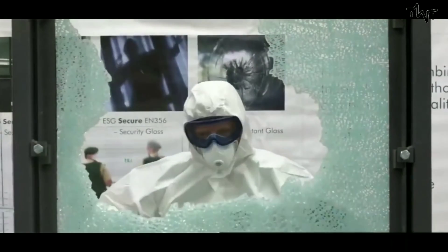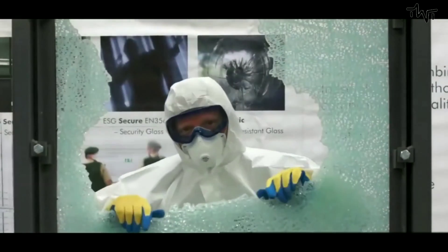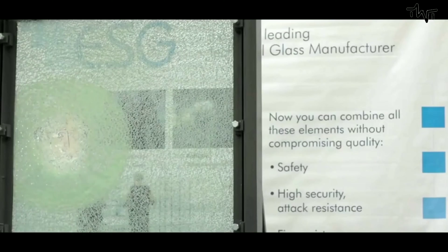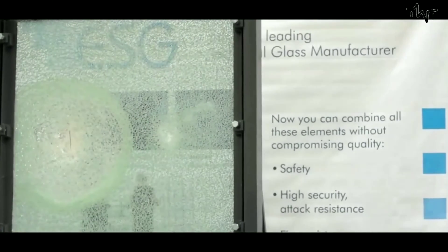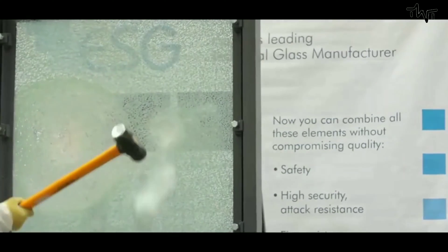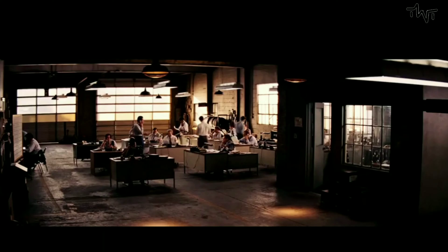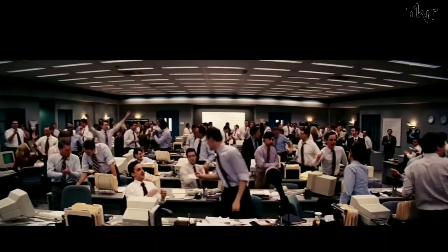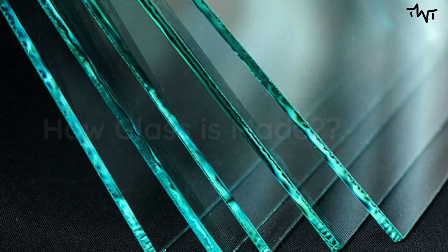Glass is a special kind of material from which many useful things can be made. We are surrounded by things made of glass, whether it be the glass windows of our house, the windshield of our car, the showcase of our house, or our mirror in which we see the reflection of ourselves. Despite having so much available around us, many of us are still unaware of how glass is made.